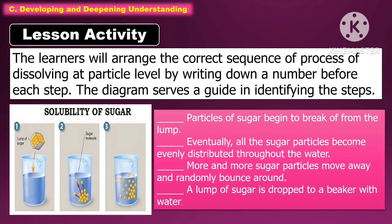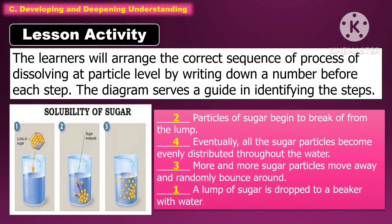For the lesson activity, the learners will arrange the correct sequence of the process of dissolving at the particle level by writing down a number before each step. The diagram serves as a guide in identifying the sequence of dissolving at the particle level.